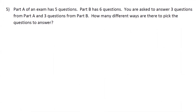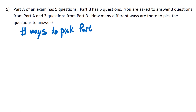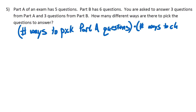Next question — very similar. This says part A of an exam has five questions and part B has six questions. You are asked to answer three questions from part A — that's basically the question we just did — and three questions from part B. We want to know how many different ways there are to pick the questions to answer. There are sort of two things to do, and this is going to be a multiplication situation because they're independent from each other.